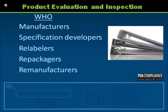Product evaluation is required by the FDA Quality System Regulations and GMP. The device manufacturer, specification developer, remanufacturer, relabeler, or repackager must show, with documented evidence, that a component, in-process unit, or completed device was processed according to the device master record and meets all of the acceptance criteria and specifications.